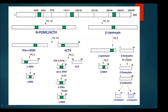Beta-endorphin gives rise to gamma-endorphin and alpha-endorphin. So from a single precursor protein you get several hormones: ACTH, melanocyte stimulating hormone (gamma, alpha, and beta), adrenocorticotropic hormone, beta-lipotropin, gamma-lipotropin, beta-endorphin, and alpha and gamma-endorphin. You get different products from the same precursor.